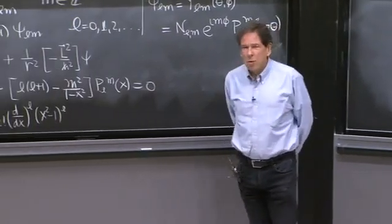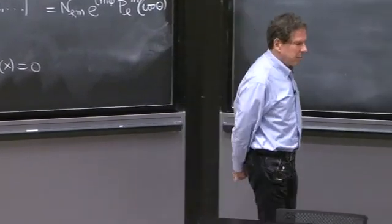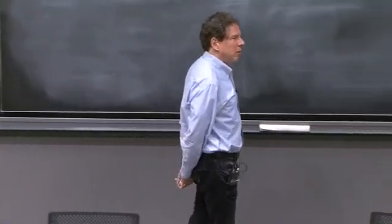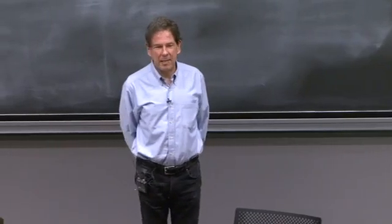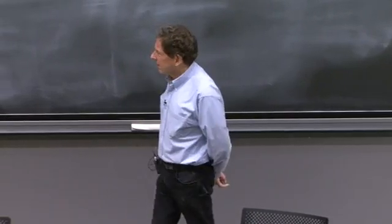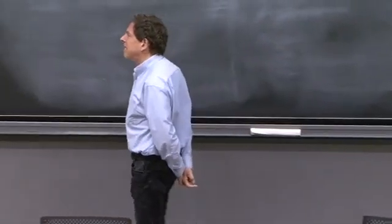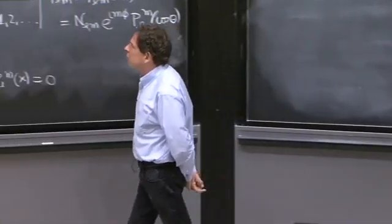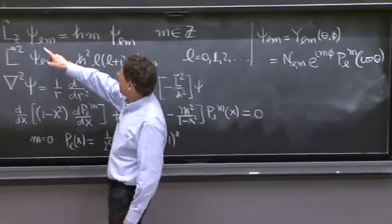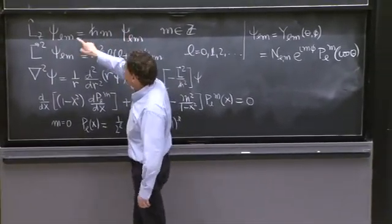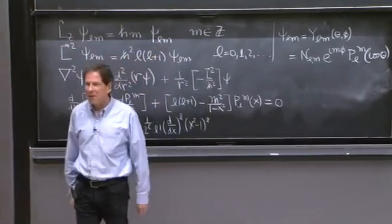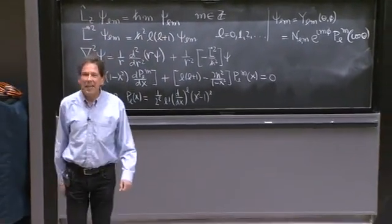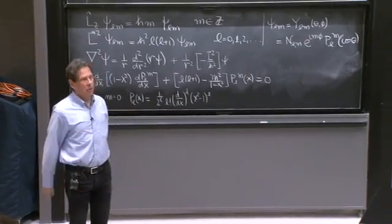Given that they commute, it's a general theorem that two Hermitian operators that commute, you can find simultaneous eigenstates of those two operators. Therefore, we set up for the search of those wave functions that are simultaneous eigenstates of one of the three components of angular momentum. Everybody chooses Lz and L squared.